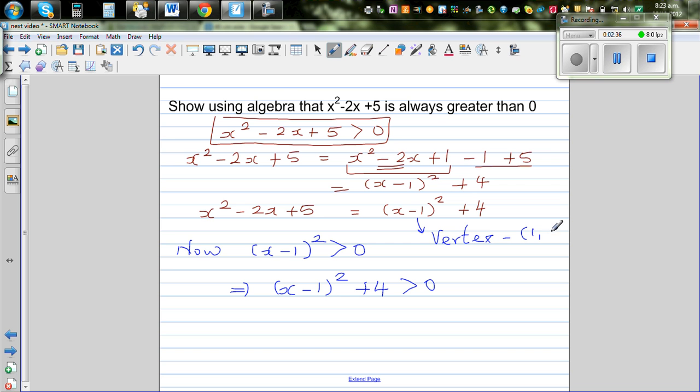1 comma 4. So this is the lowest point. Vertex is 1 comma 4 means your y value is never going to go below 4. So if you graph this, a sketch of it, the sketch would look like this.